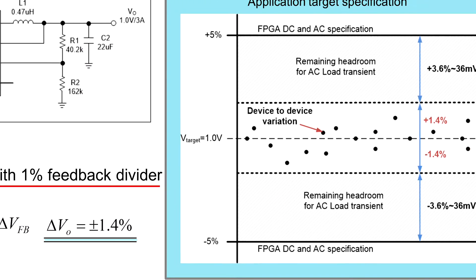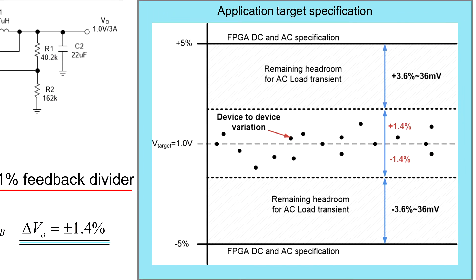What does this mean now to our overall target window of ±5%? We can see that the DC output voltage regulation takes up already this window. So for our load transient changes we have only a target window of ±36mV.